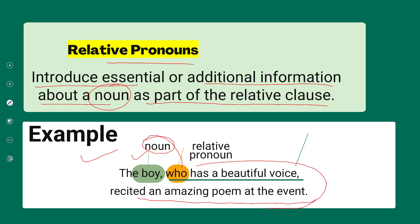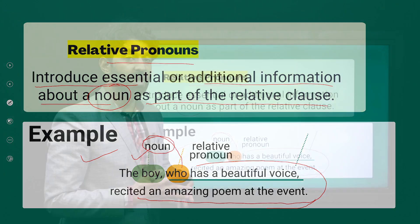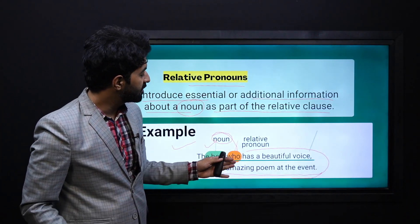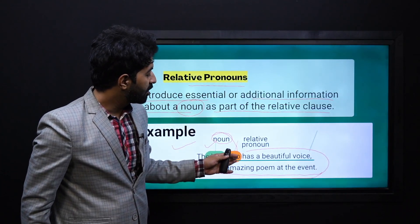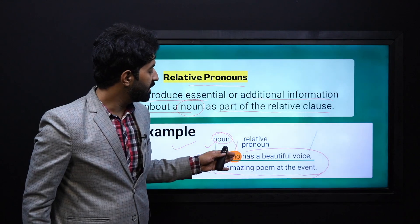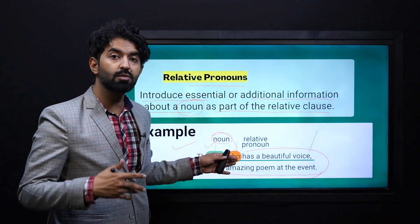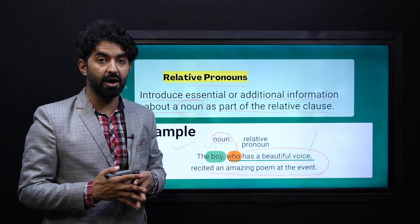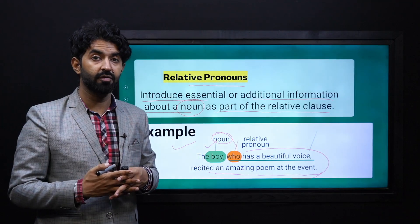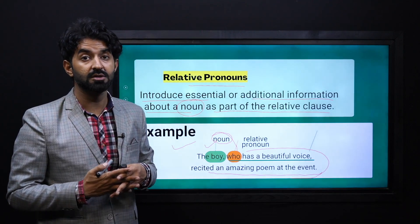This is why it is named a relative pronoun — because using 'who,' we are adding more information to the noun that we have, in this case, 'the boy.'